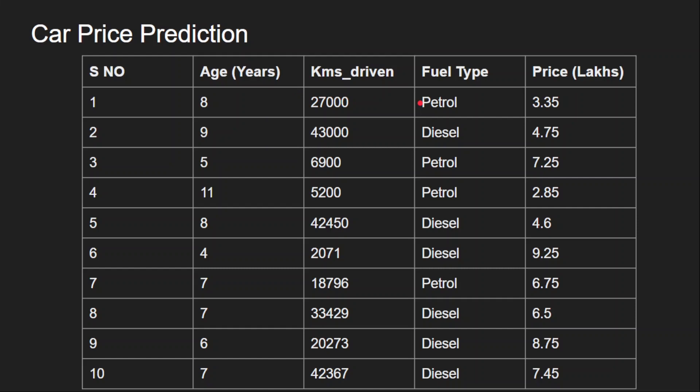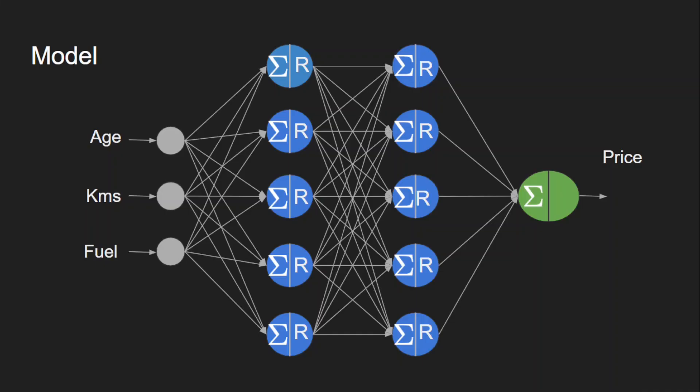Now, we need to build a neural network which can be trained with this data, and upon learning, it should be able to predict the car price given these three inputs. Let's say I am building this model for our use case. This is a simple three layer network. We should exclude the input layer when you are counting the number of layers, because there is no computation happening in the input layer. So, input layer is just a placeholder.